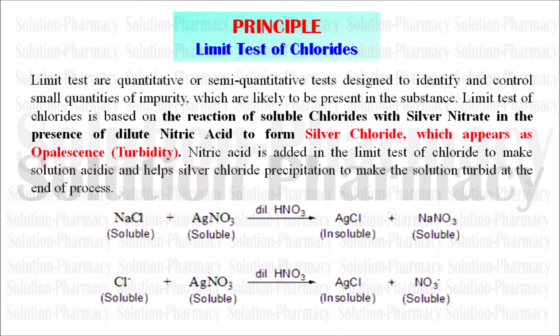The principle of the limit test of chloride is that in both the standard and the test solution, we add silver nitrate (AgNO₃) solution. The silver nitrate reacts with soluble chloride present in both solutions in the presence of dilute HNO₃. After reacting with the chloride, it forms silver chloride (AgCl), which is an insoluble solid particle that appears as opalescence in the solution.